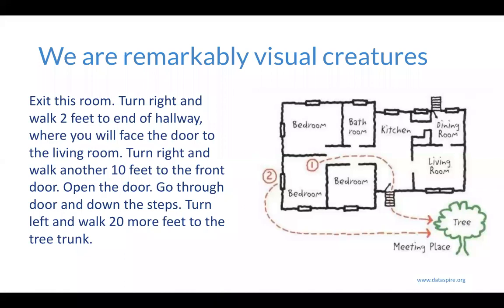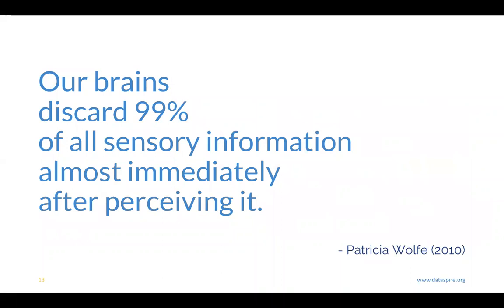We are remarkable visual creatures. We could post text for you to read or post a diagram, and those of us with visual ability will gravitate toward visual reference cues because we can make sense of the information very quickly. But here's the catch: our brains discard about 99% of all sensory information almost immediately after perceiving it. So how do we find a happy balance between being visually driven and forgetting the vast majority of what we see?